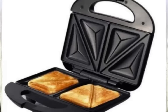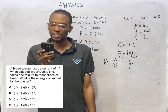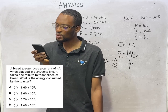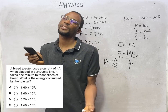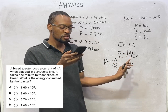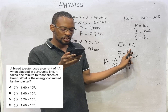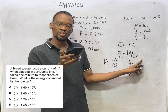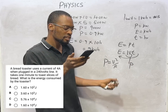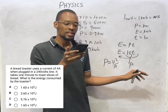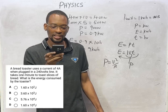A bread toaster uses a current of 4 ampere when plugged into a 240 volt line. It takes one minute to toast slices of bread. What is the energy consumed by the toaster? Energy is power times time, but in this case we are not given power — we are given current and voltage. Power is current times voltage, so energy becomes current times voltage times time. Voltage is 240 volts and time is 60 seconds.